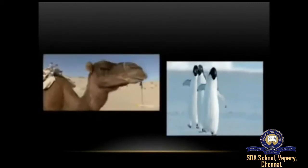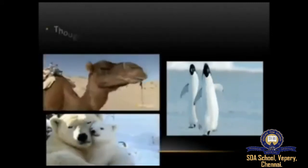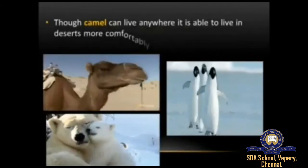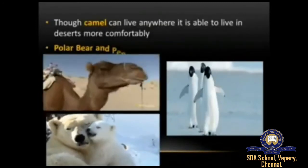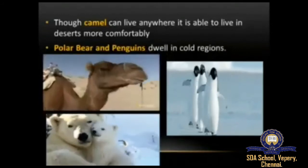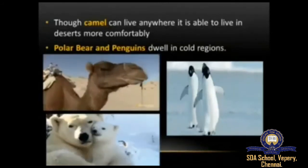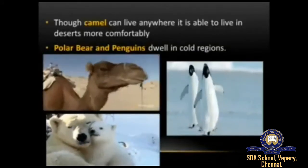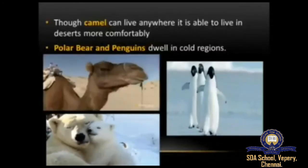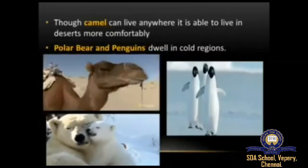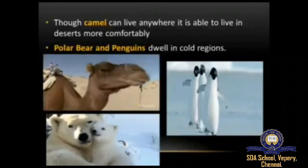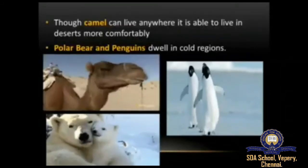The geographical features and environmental conditions on earth differ from one place to another. Though a camel can live anywhere, it is able to live in deserts more comfortably. Similarly, polar bears and penguins dwell in cold regions. So camels can live anywhere but will live in deserts most comfortably, while polar bears and penguins dwell comfortably only in colder regions.